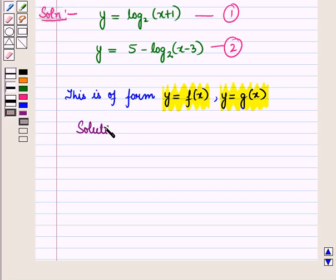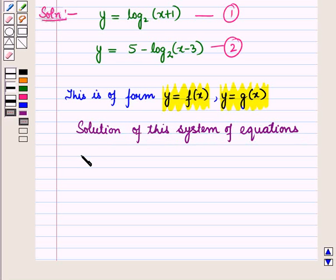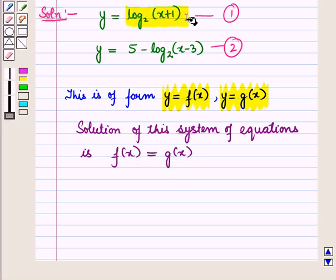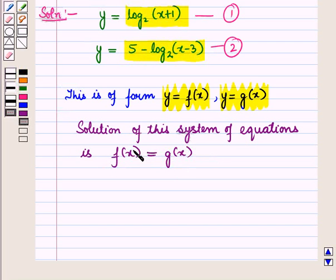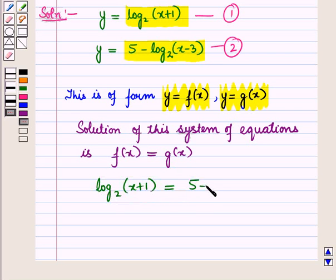Now the solution of this system of equations will be given by the equation f of x is equal to g of x. This is f of x and this is g of x. Since the solution of this system of equations is given by f(x) = g(x), we have log(x+1) to the base 2 is equal to 5 minus log(x-3) to the base 2.